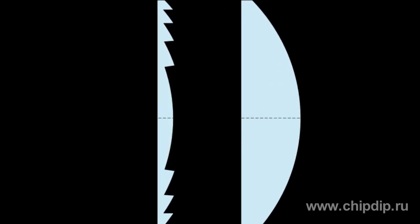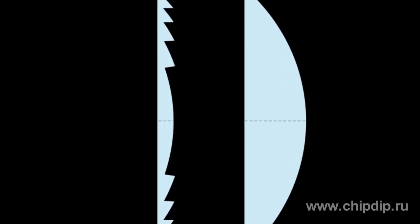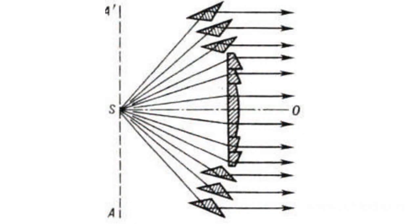Rays from a point source located at the lens focus come out in the shape of an almost parallel beam after refraction. There are circular and drum Fresnel lenses. Circular lenses send the light flux in one direction, while drum lenses send light from the source in all directions horizontally.